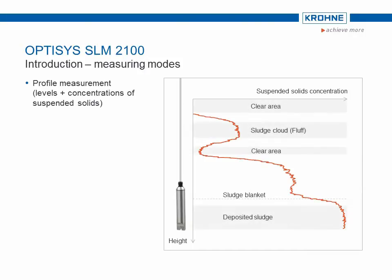As the sensor travels down through the medium, in addition to clear water zones with very low particle concentrations, we also encounter one or more so-called sludge clouds, or fluff, and below these a zone of increasing concentration until we arrive at the sludge blanket and the deposited sludge at the tank bottom. This sedimentation profile can be directly measured in the profile mode.